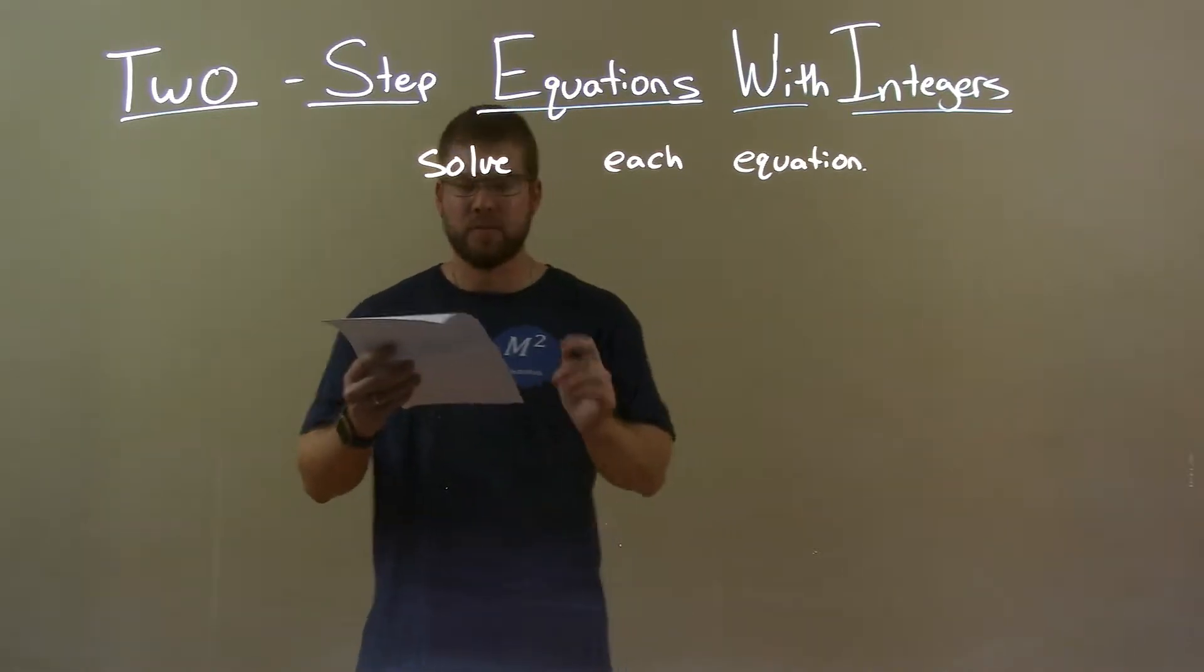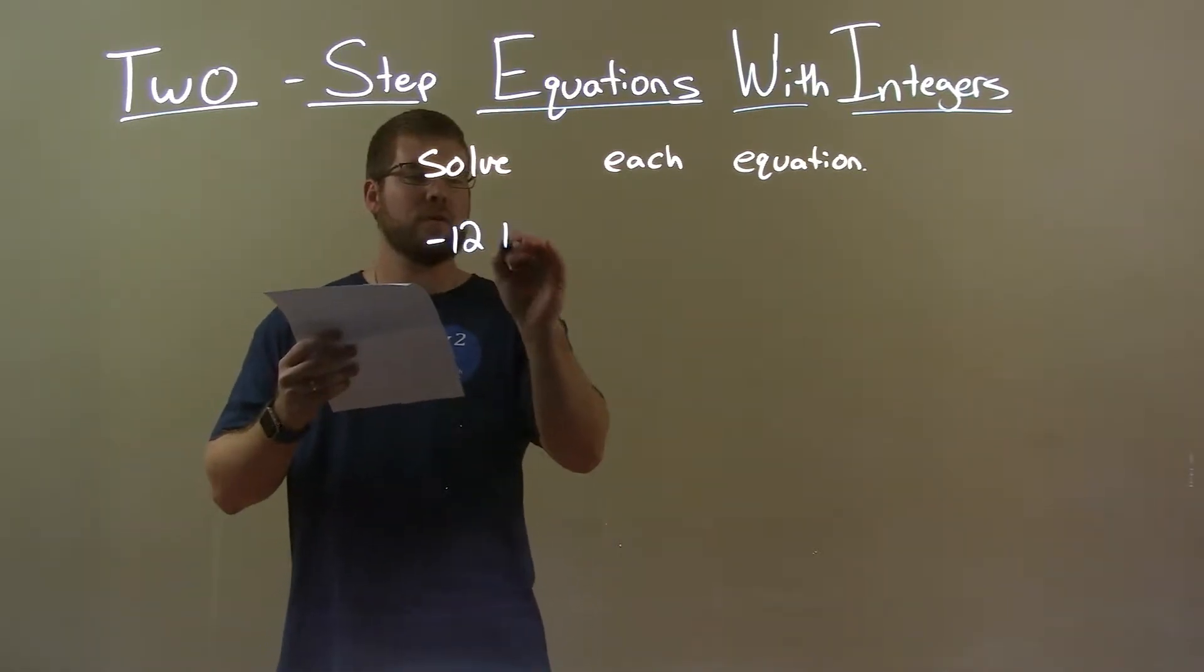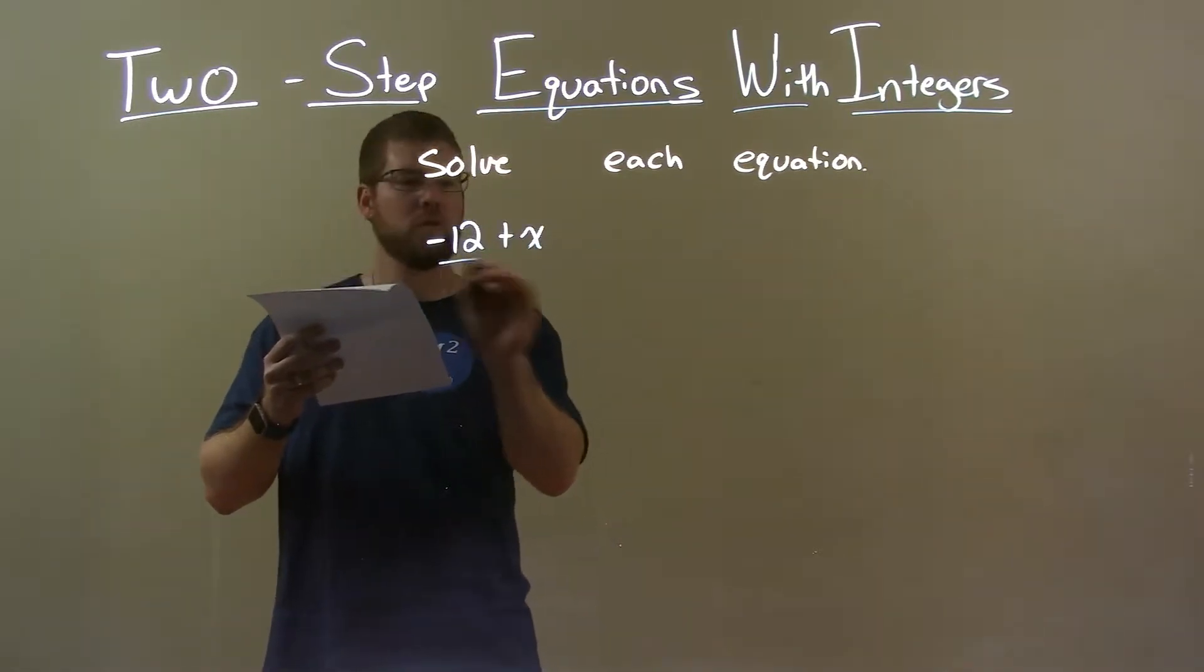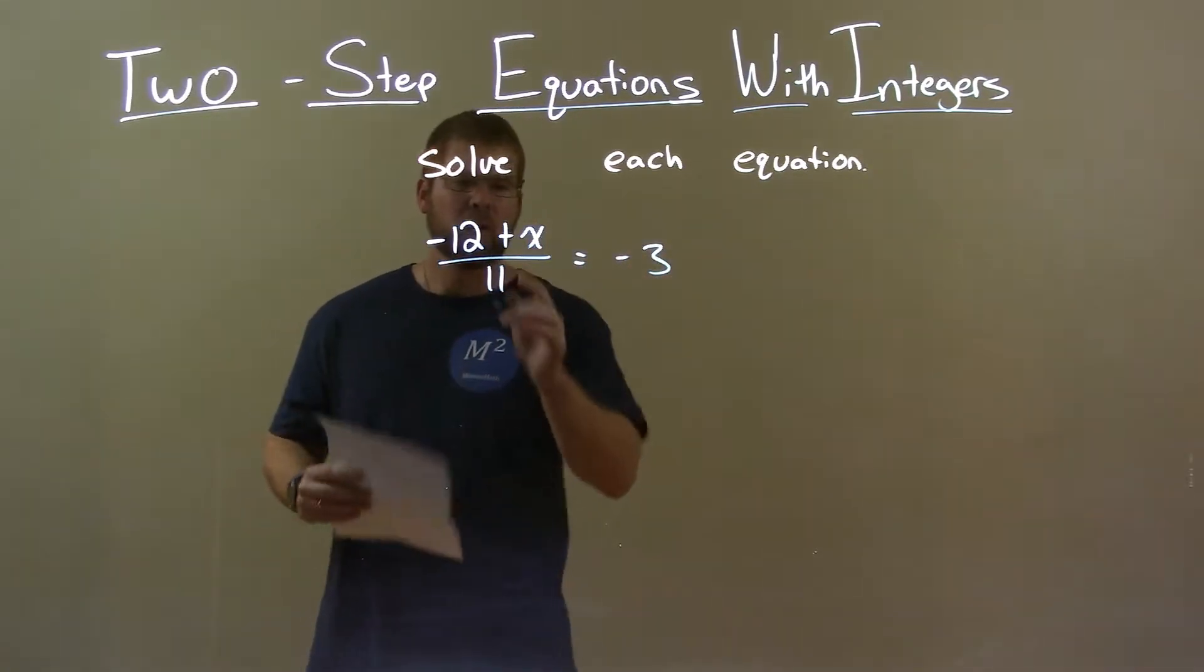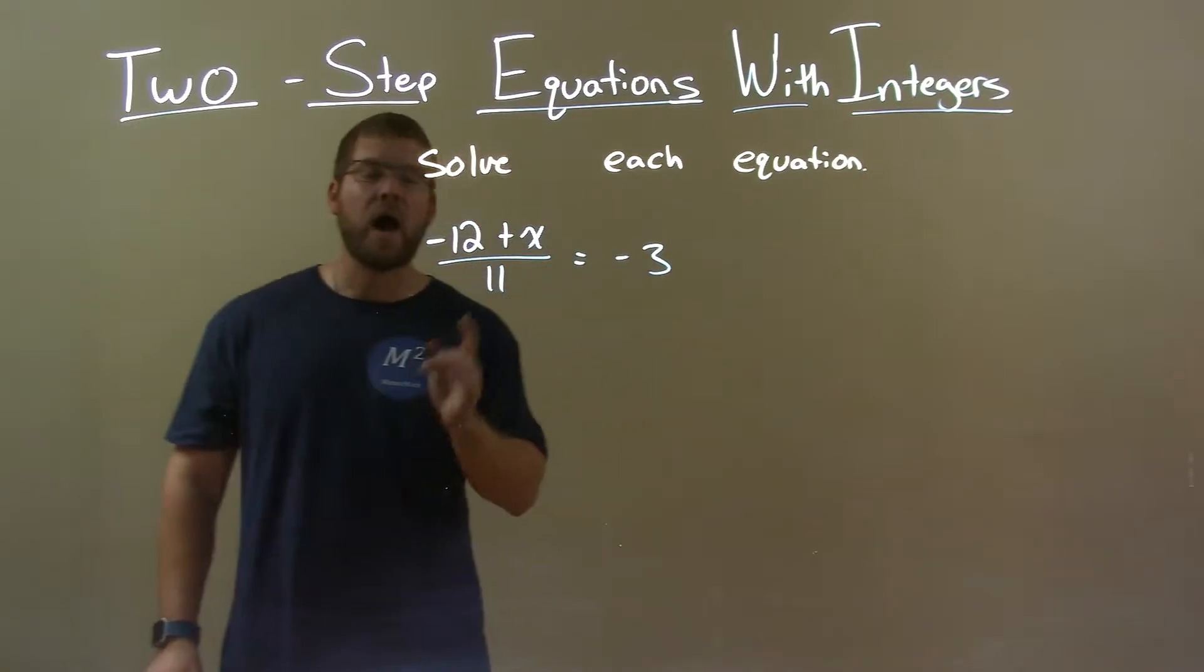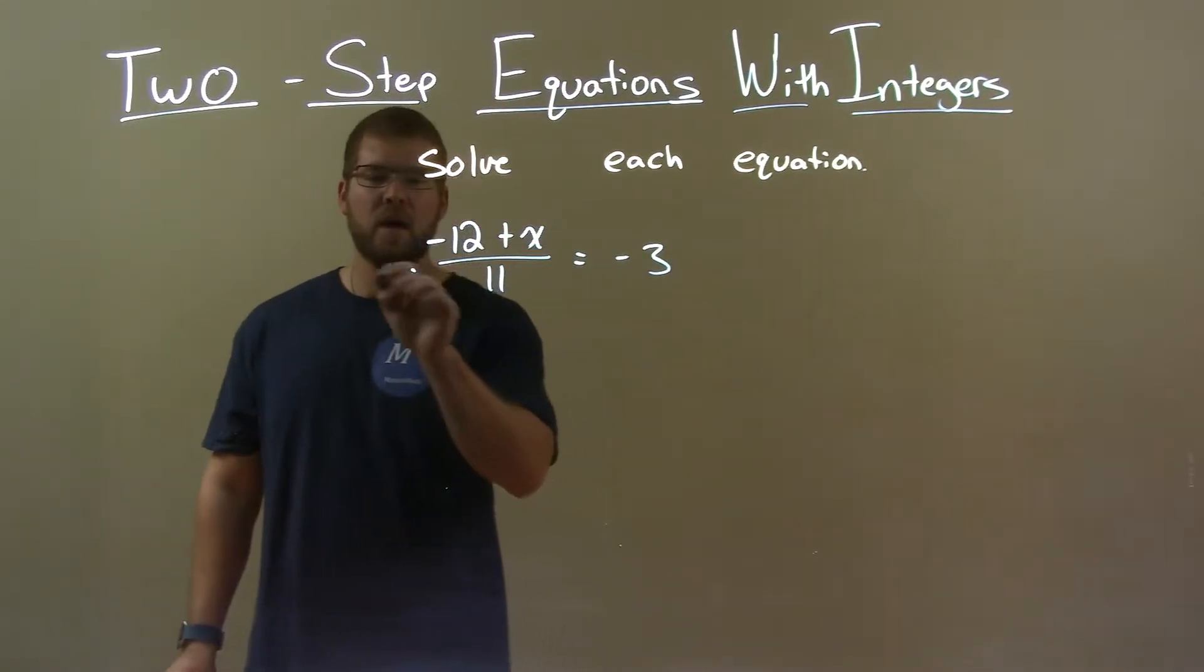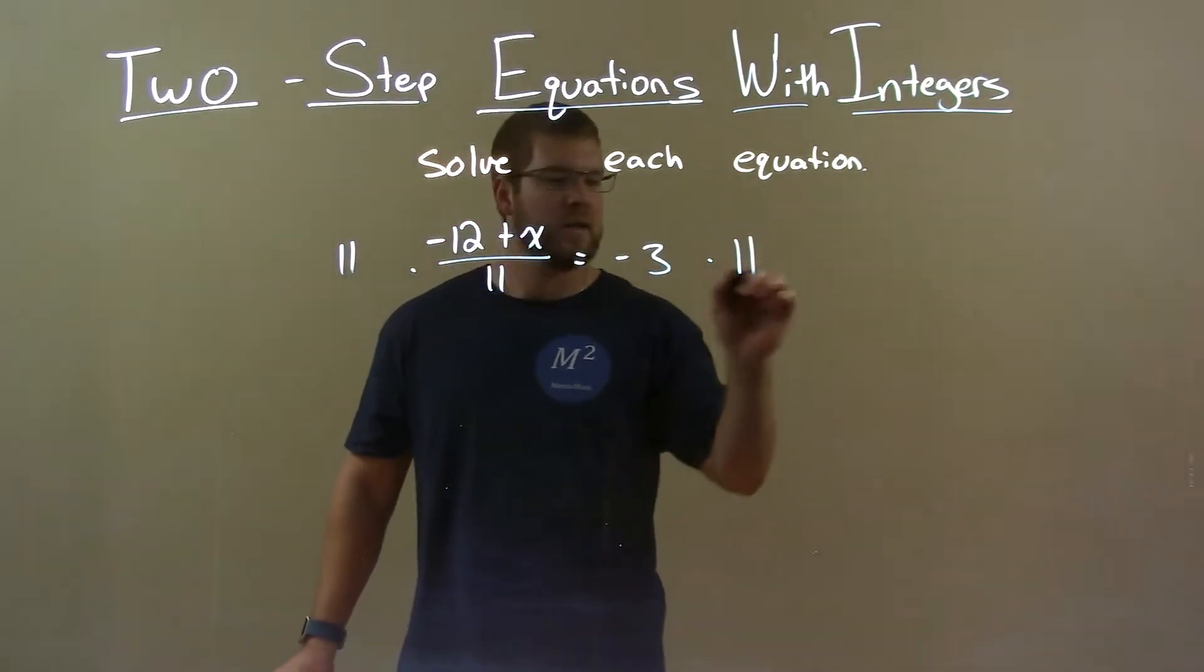Now, if I was given this equation, negative 12 plus x over 11 equals negative 3. We're dividing by 11 there. Opposite of division, multiplication. I multiply both sides by 11.